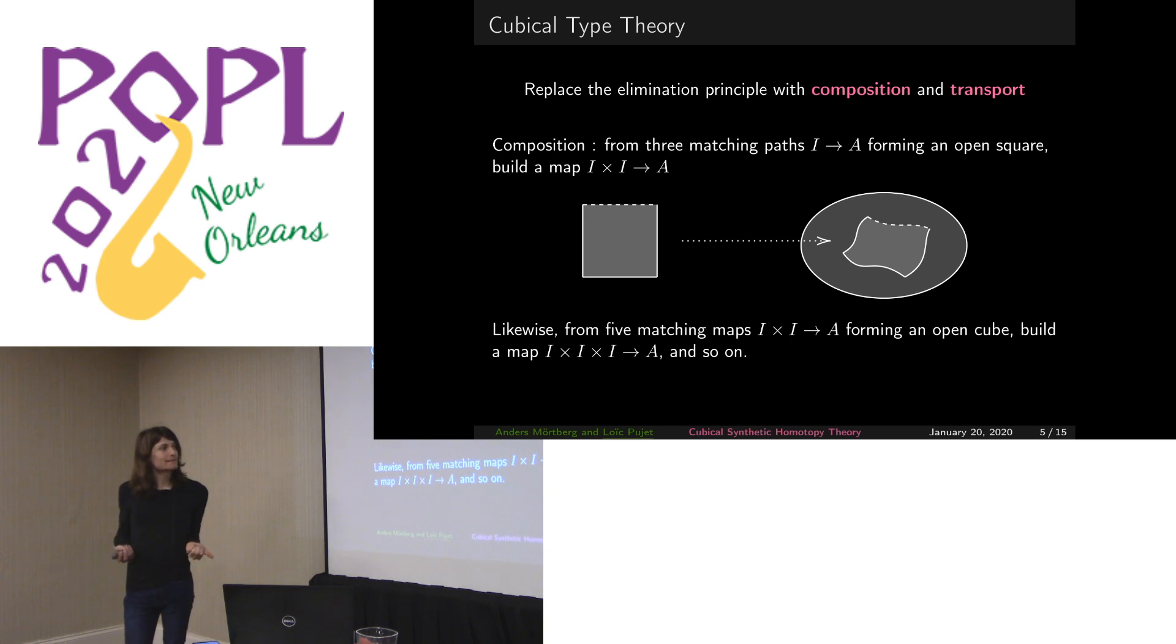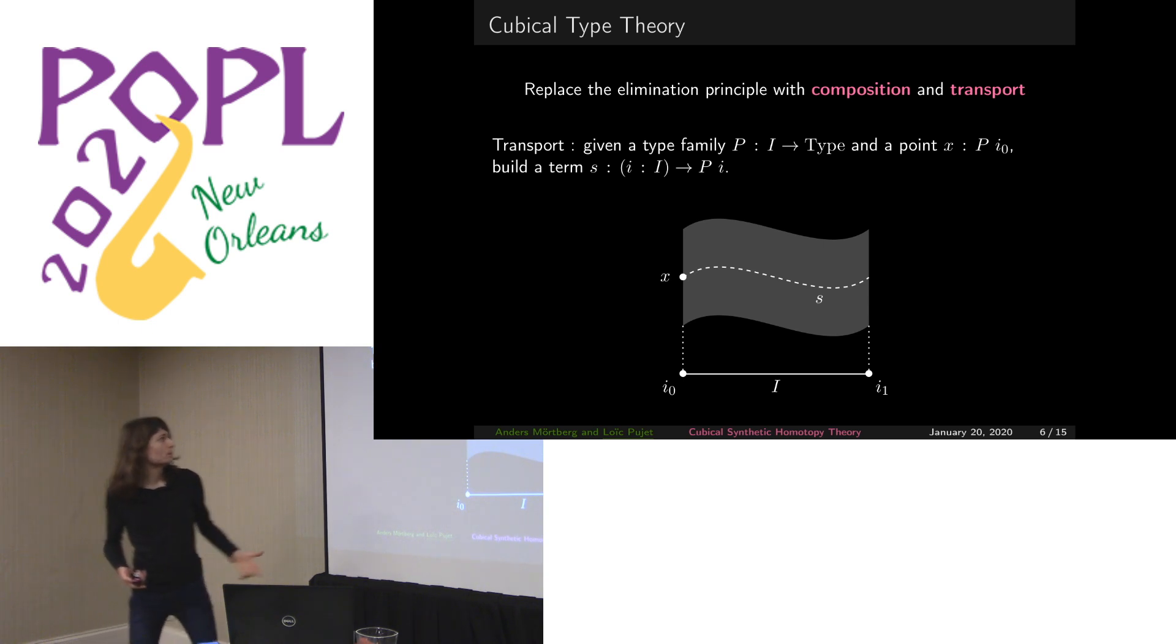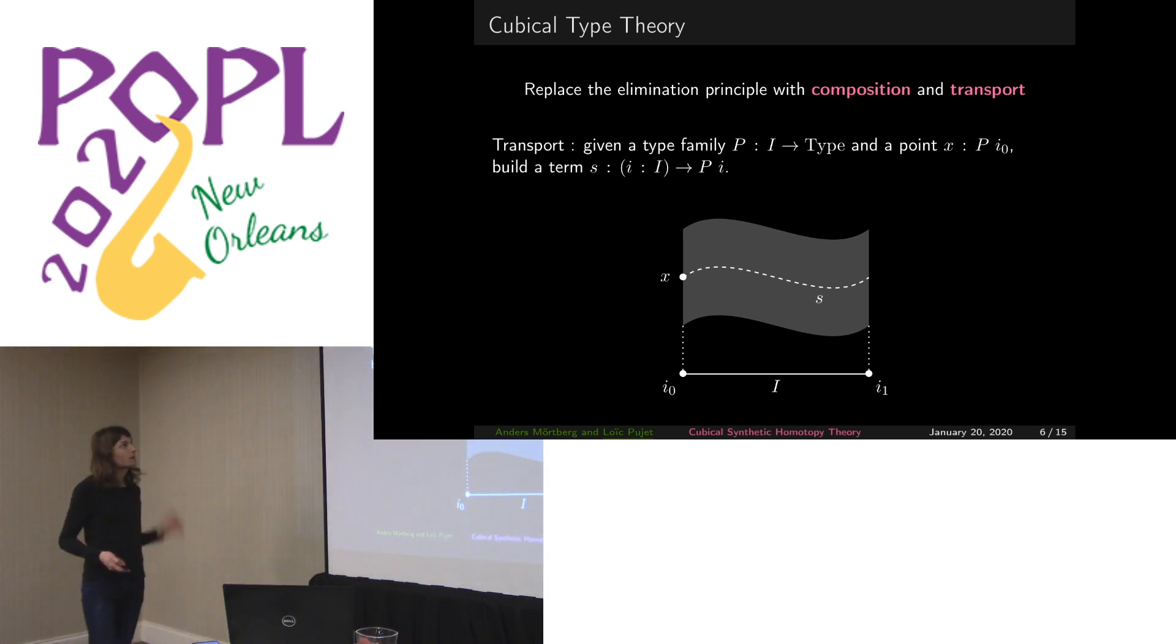Given such an open box, if you feed that data to composition, the composition primitive, you will get a map from the square to our type A, the square being just the Cartesian product of the interval with itself. In higher dimensions, likewise from five matching maps from squares to our type, if these matching maps form an open cube, then you can fill that cube. This is nice because this is quite close to really common properties in homotopy theory. This is really close to what a topologist would like to work with, unlike the J eliminator which confuses math people.